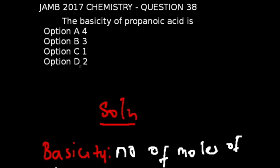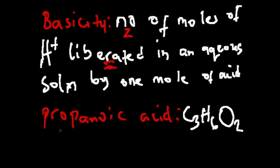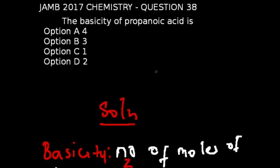Question number 38 of the JAM 2017 chemistry exams: the basicity of propanoic acid. Basicity is the number of replaceable hydrogen ions — in other words, the number of moles of hydrogen ions liberated in an aqueous solution by one mole of an acid. For propanoic acid, with the formula C3H6O2, one mole of hydrogen ions can be liberated per mole of acid. Therefore the answer is option C, which is 1.